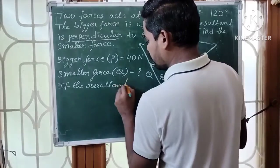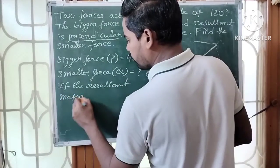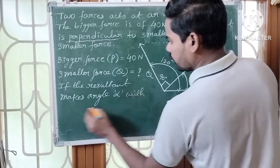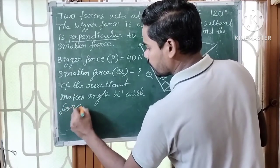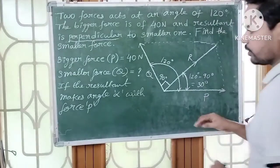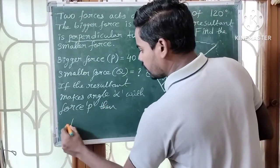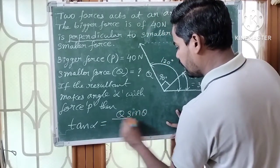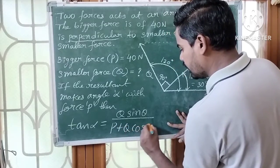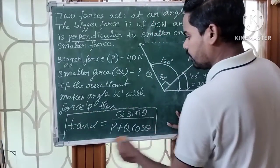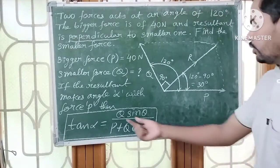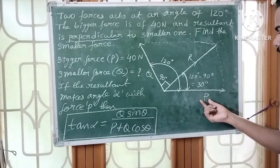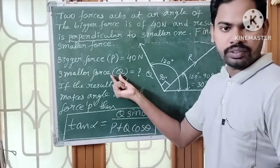In the parallelogram law of forces, the resultant makes an angle alpha with the horizontal force P, where P is the bigger force. The formula is: tan alpha equals Q sin theta divided by (P plus Q cos theta). Using this formula we can find the smaller force Q.